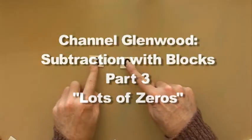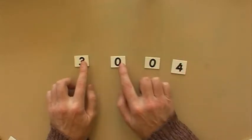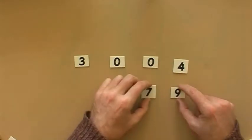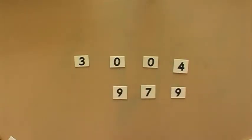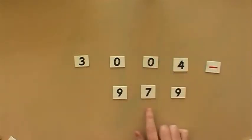What about if we have a number that has a lot of zeros in it? If you look at that, you might think yes, that is going to be a problem because when I go to do some borrowing, there will be nothing there. If we have a look at this, 3004 take away 979. Obviously we can do that because 979 is obviously less than 3004, so we know it can be done.